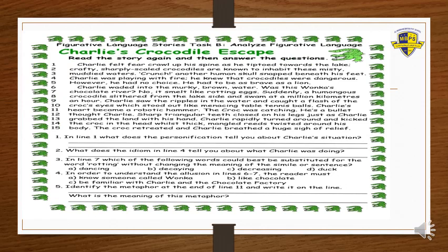Now, students, we will move on to the second worksheet, in which you have Task B, which says to analyze the figurative language. You have to read the story again and then answer the questions. Question number one says: in line one, what does the personification tell you about Charlie's situation? The personification tells us that Charlie is in a scary situation and he is frightened.